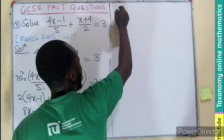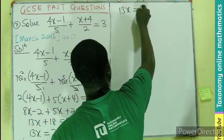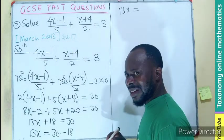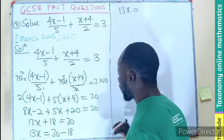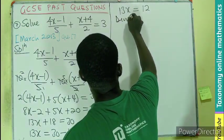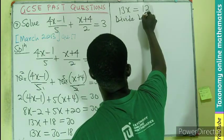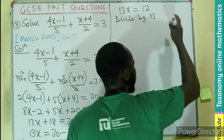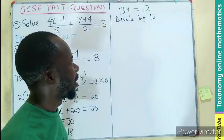Fast forward, we have 13x equals 30 minus 18, which is 12. We divide by 13, which is the coefficient of the variable.